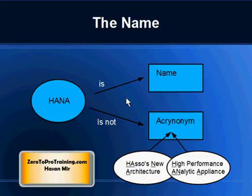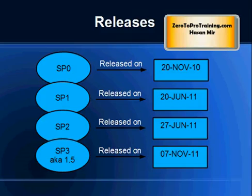Another misconception is that HANA is an acronym — it is not. It doesn't stand for anything like 'High Performance Analytical Appliance' or similar. It's just a name. Here's a quick history: Service Pack 0 was released on 20th November 2010, Service Pack 1 on 20th June 2011, Service Pack 2 on 27th June 2011, and Service Pack 3 (also known as 1.5) on 7th November 2011.